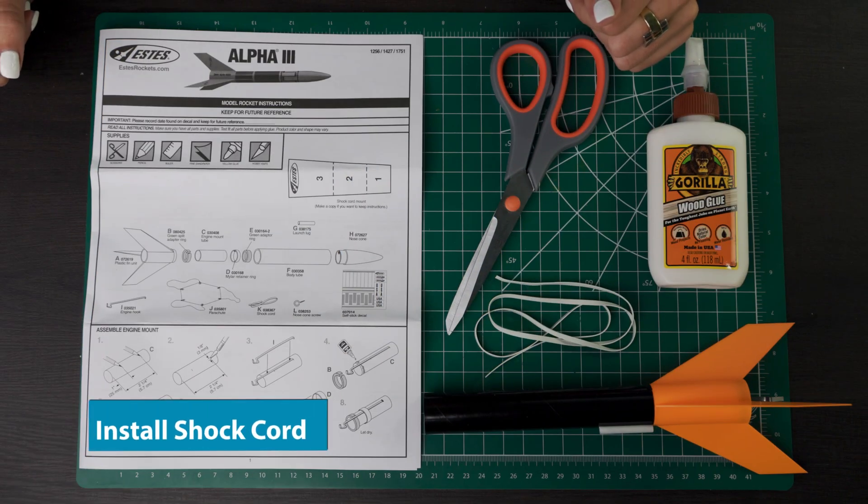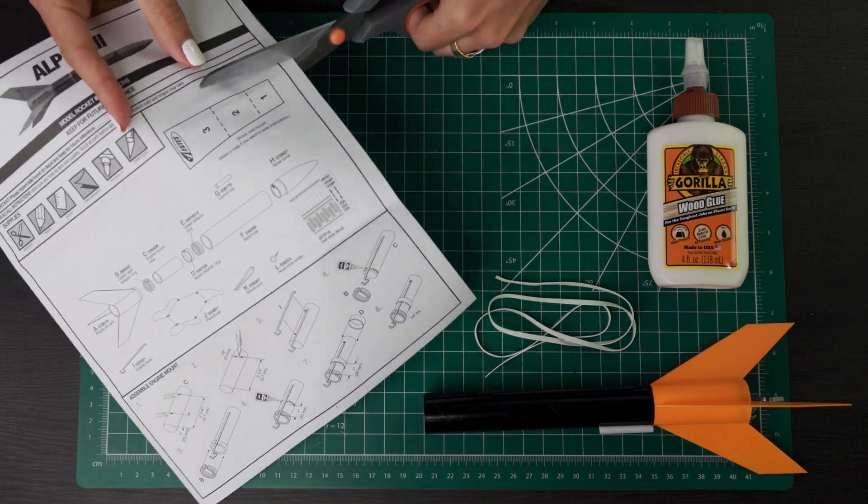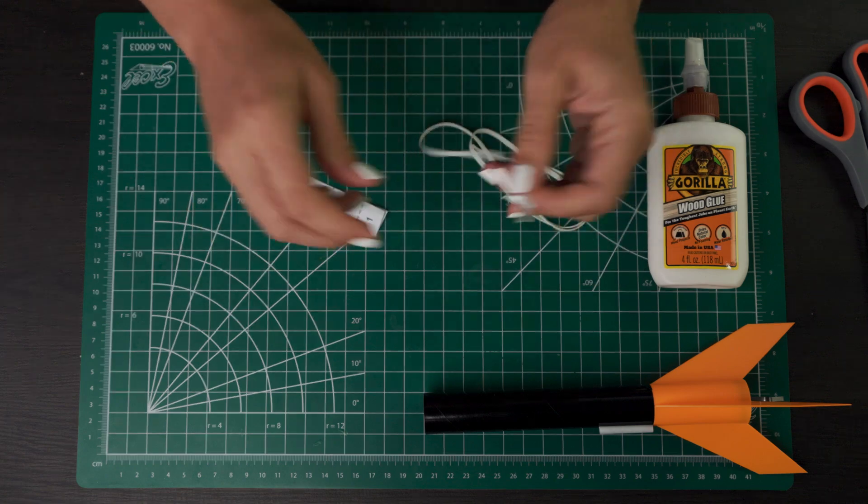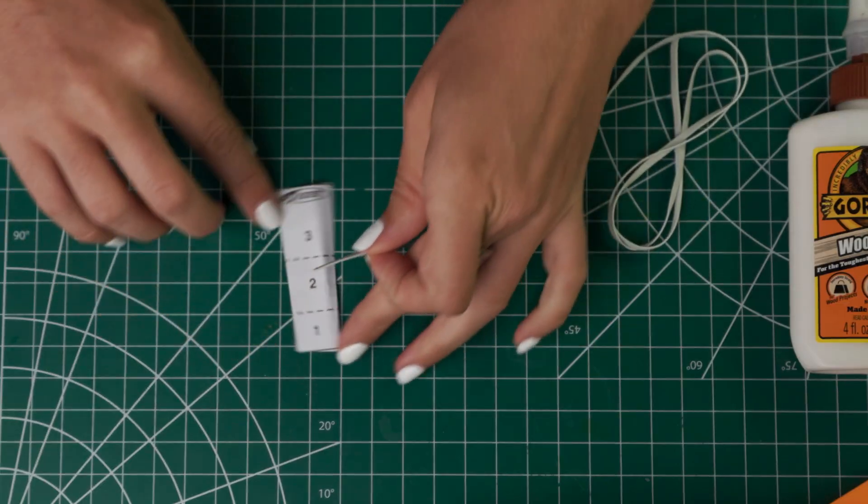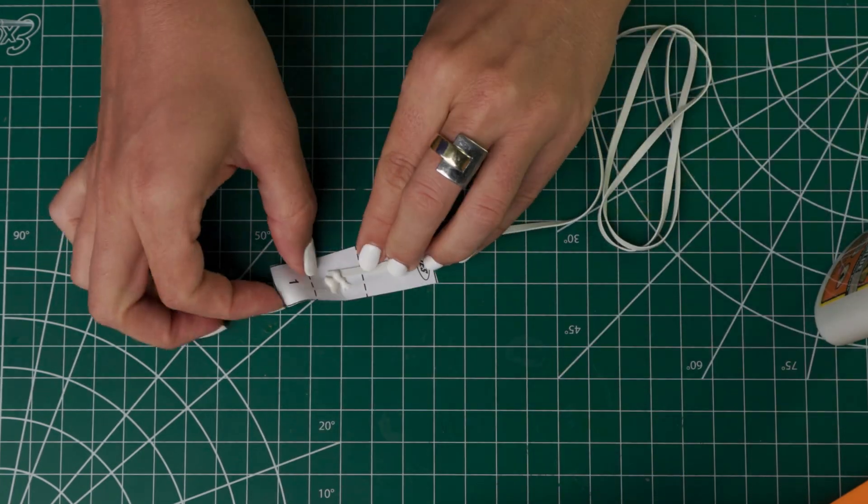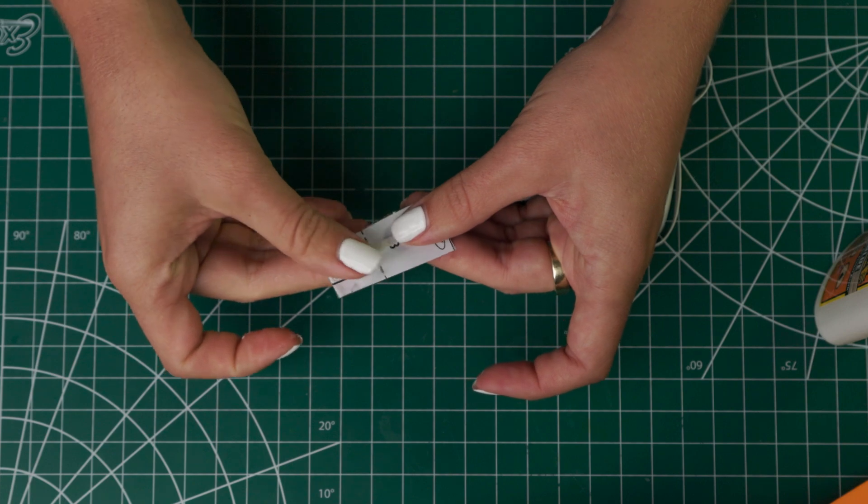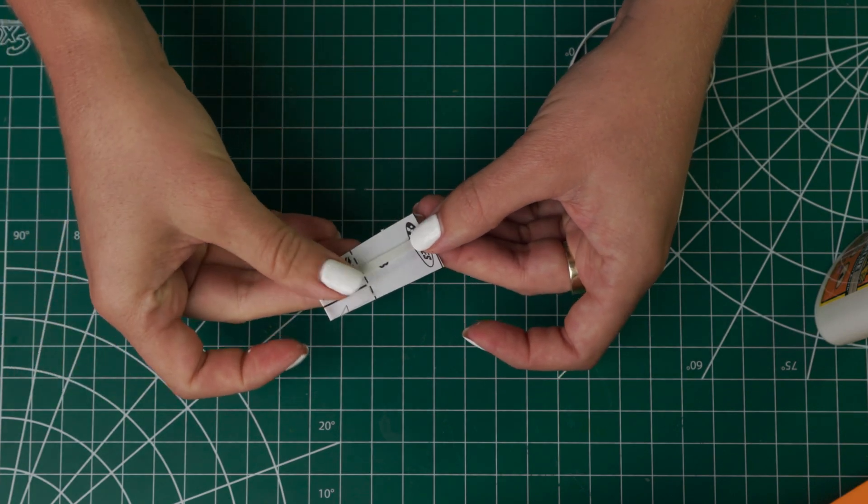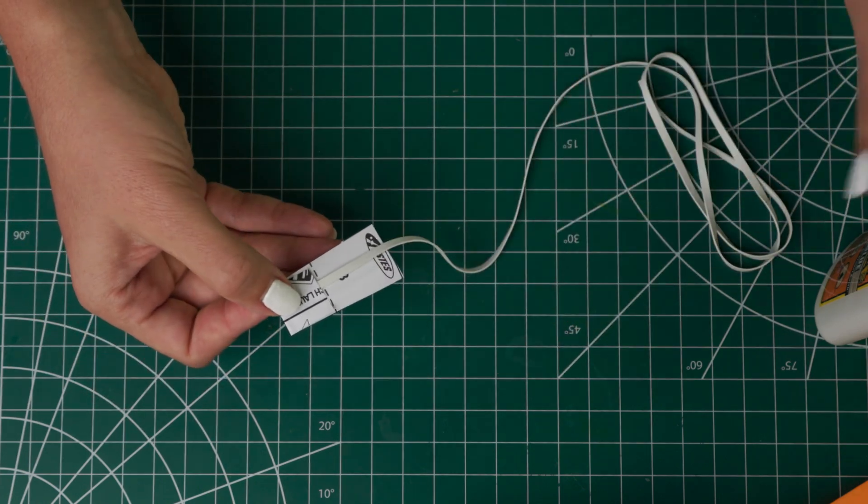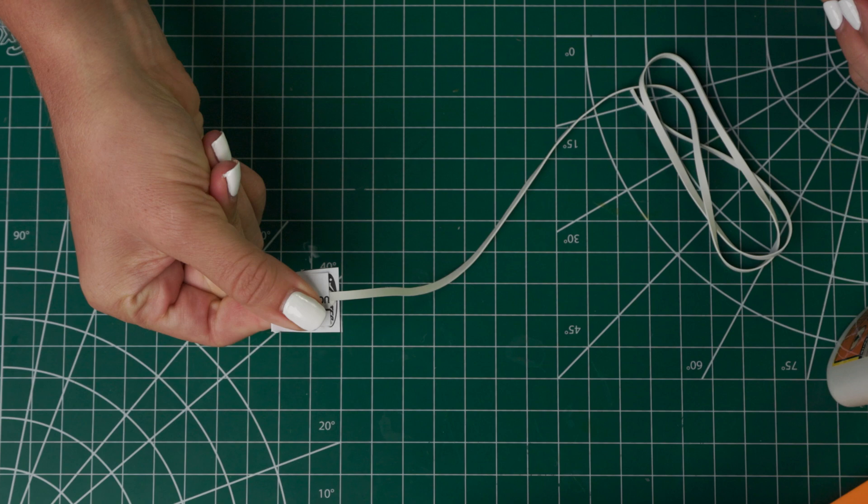Now we're going to install the shock cord. And to do that, you're going to need this shock cord mount from your instructions. So cut that out first. Next, you're going to take just one end of the shock cord and put it on the number two, put some glue there and fold the one down onto it. Now, similar tip with this as before, use less glue than you think you need to. You don't want the glue to really soak through that paper. So hold that one for a second to set. And then you'll do the same thing, put glue on number three, and then fold this part over.